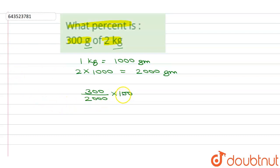So we'll cancel zeros - these two zeros will cancel out, and there again this two will get cancelled out. Now 2×15 times is 30, so here we will get as 15 percent. It means 15 percent of 2 kg will give us 300 gram.